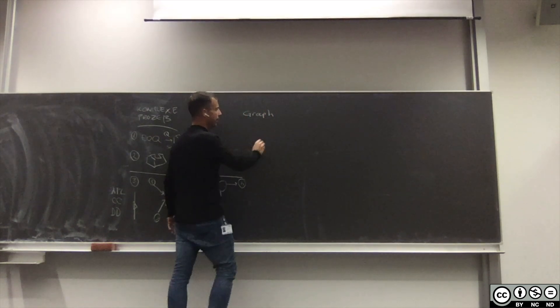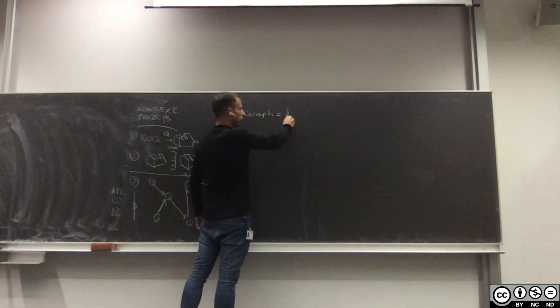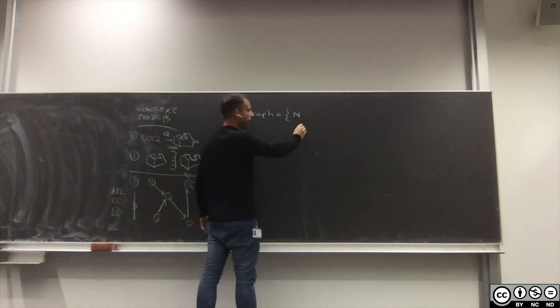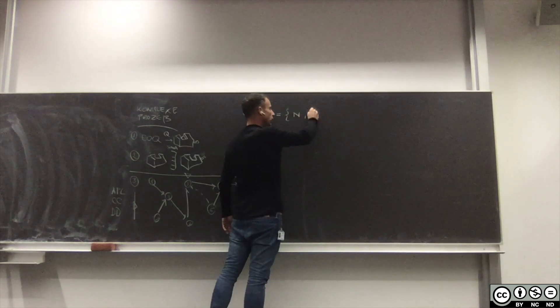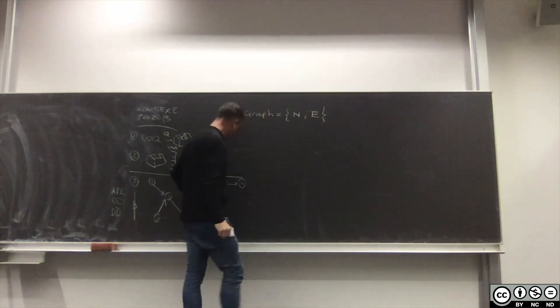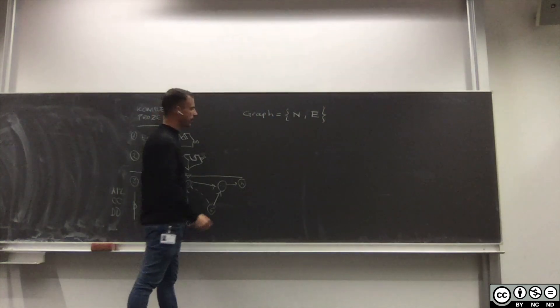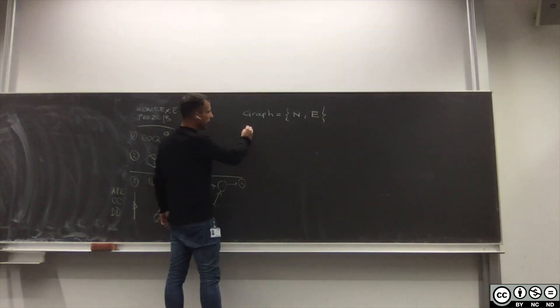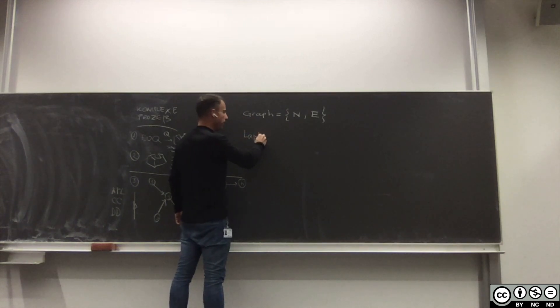Ein Graph ist ein mathematisches Konstrukt, der beschreibt ein Netzwerk von N Knoten und E Edges, die Beziehungen, die Wechselwirkungen. Und dieses Graph wird beschrieben durch den Laplacian Matrix.